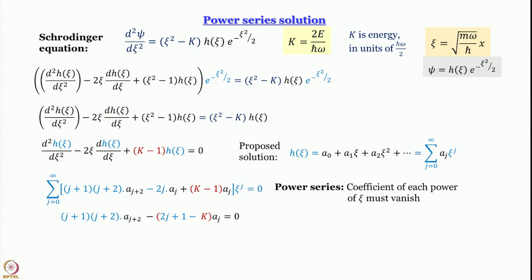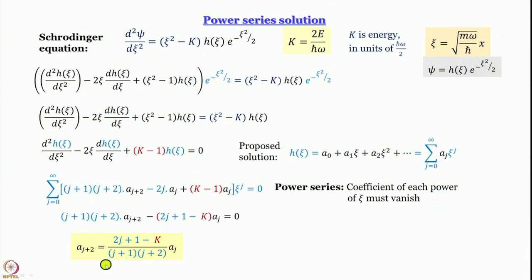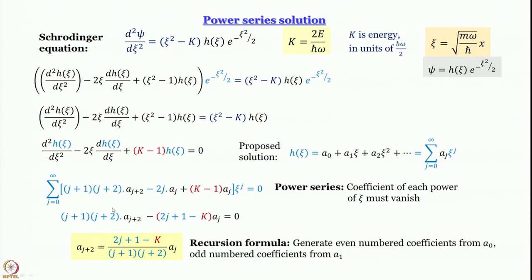The recursion formula is: aⱼ₊₂ = [(2j+1−k) / ((j+1)(j+2))] · aⱼ. If you know aⱼ, you can work out aⱼ₊₂. This is called a recursion formula. If you know a₀ you can work out all even-numbered coefficients; if you know a₁ you can work out all odd-numbered coefficients.